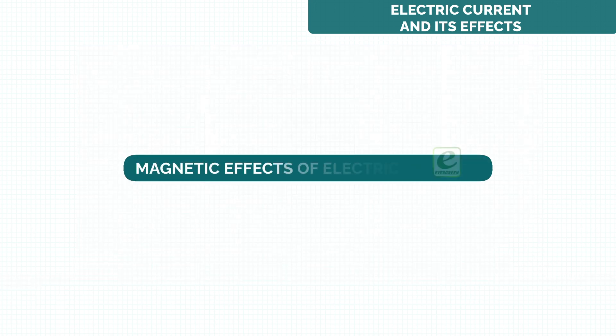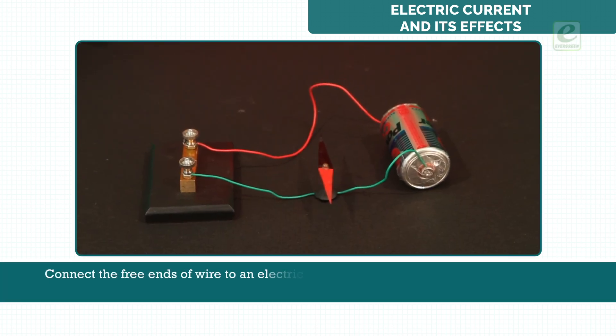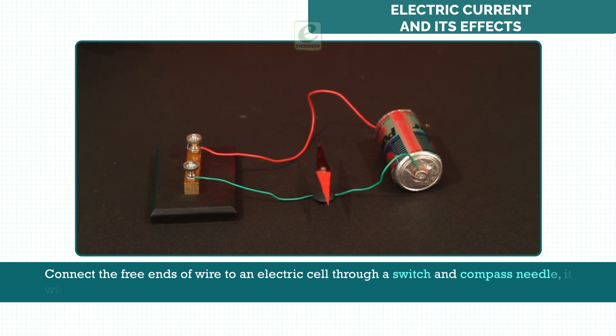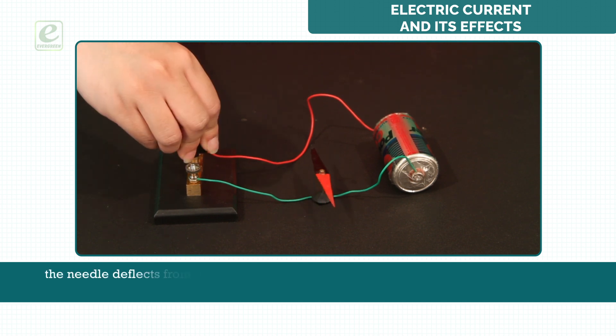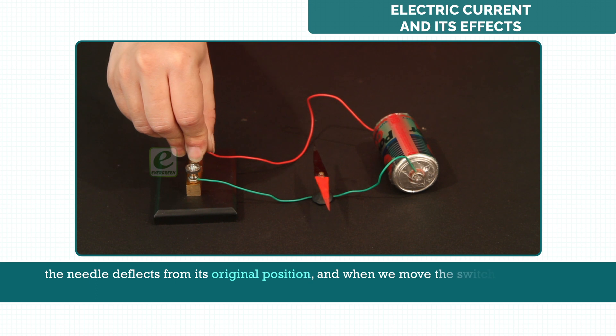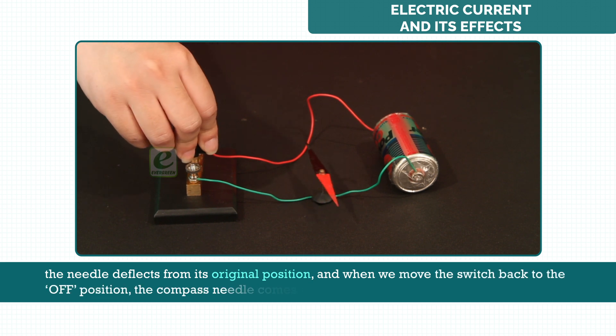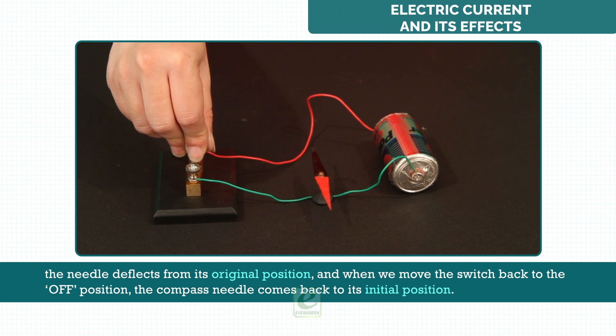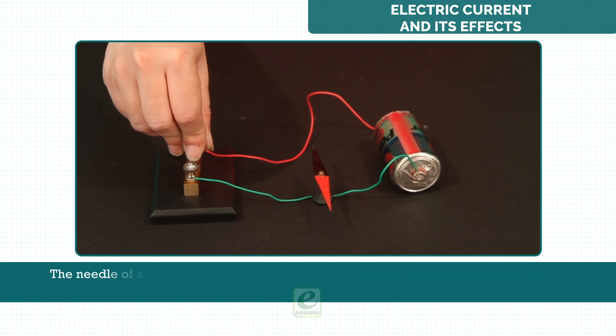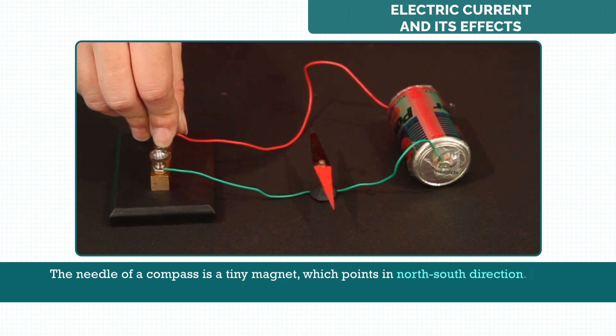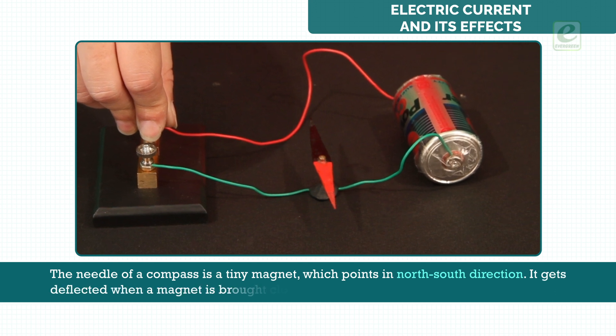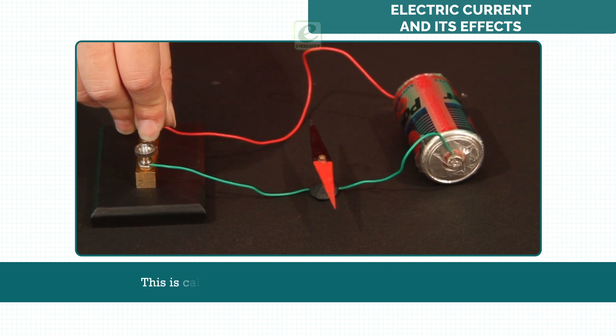Magnetic effect of electric current. Connect the free ends of wire to an electric cell through a switch and compass needle. It will be seen that when we switch on, the needle deflects from its original position and when we move the switch back to the off position, the compass needle comes back to its initial position. The needle of a compass is a very tiny magnet which points in north-south direction. It gets deflected when a magnet is brought close to it. This is called the magnetic effect of the electric current.